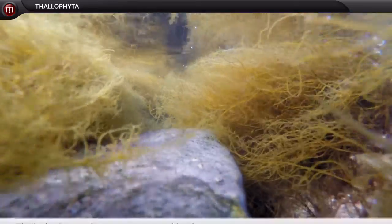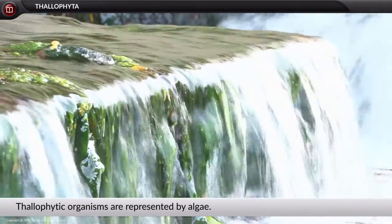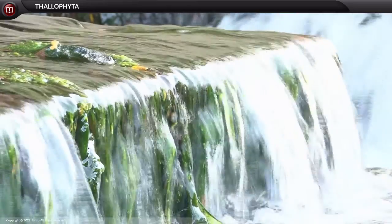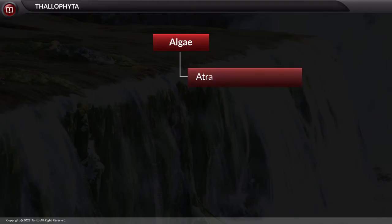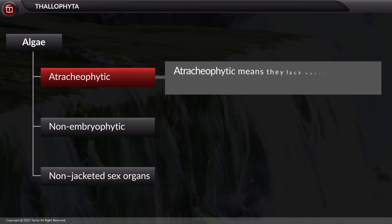Almost all thalophytic organisms are represented by algae. Algae are atracheophytic, non-embryophytic with non-jacketed sex organs. Atracheophytic means they lack vascular tissues, xylem and phloem.